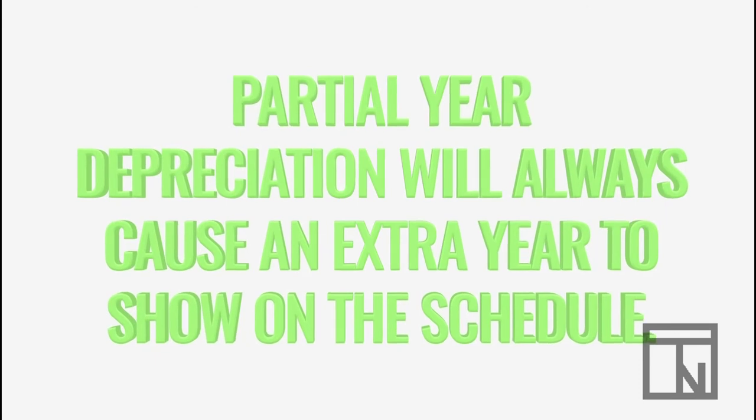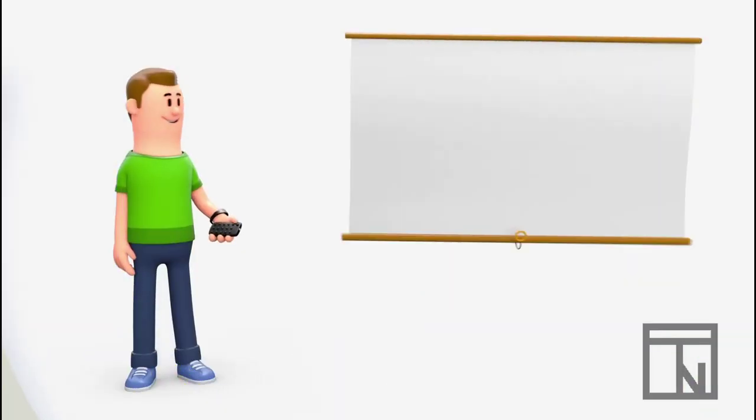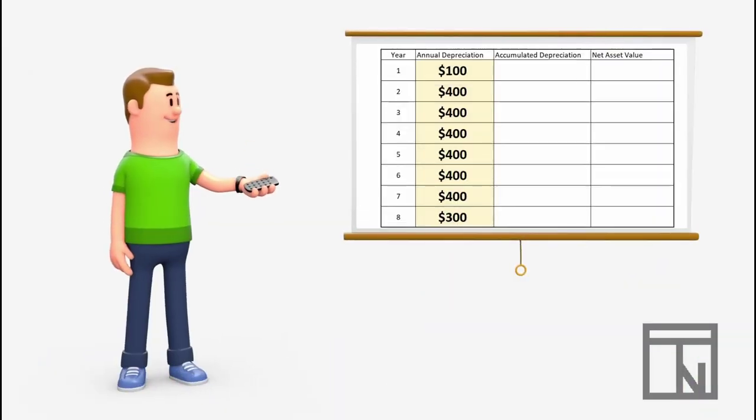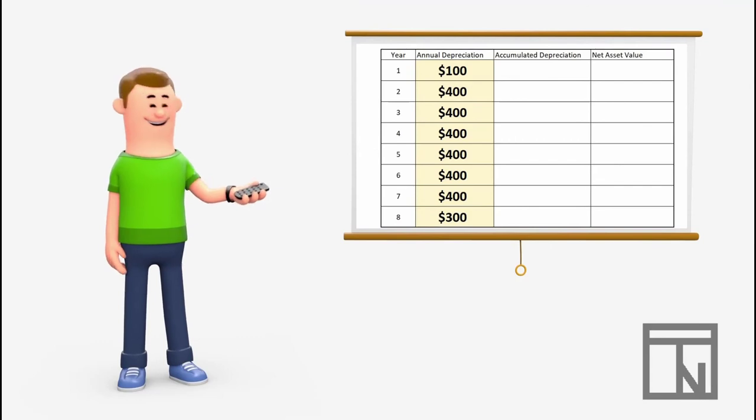Now, let's have Bob enter in his annual depreciation for each year. Perfect! The next step is for Bob to calculate his accumulated depreciation.